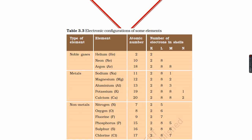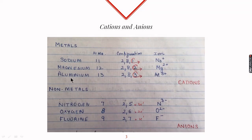Everything in the universe wants to achieve stability, and so do elements. This is the reason that metals and nonmetals react — because they want to achieve stability. Now, sodium has atomic number 11 and its configuration is 2, 8, 1, and it will follow the octet rule.